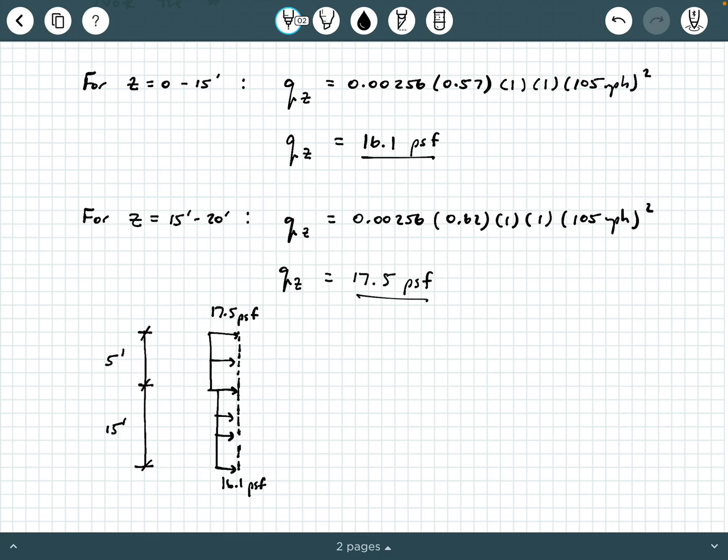Now, again, as I've said it a couple times now in this video and the previous videos, the velocity pressure is typically not the end of the story. This is just what you use to get to the design pressure. But this example was just meant for us to exercise how do we get the velocity pressure and how do we navigate ASCE 7-22 to extract values we're interested in.